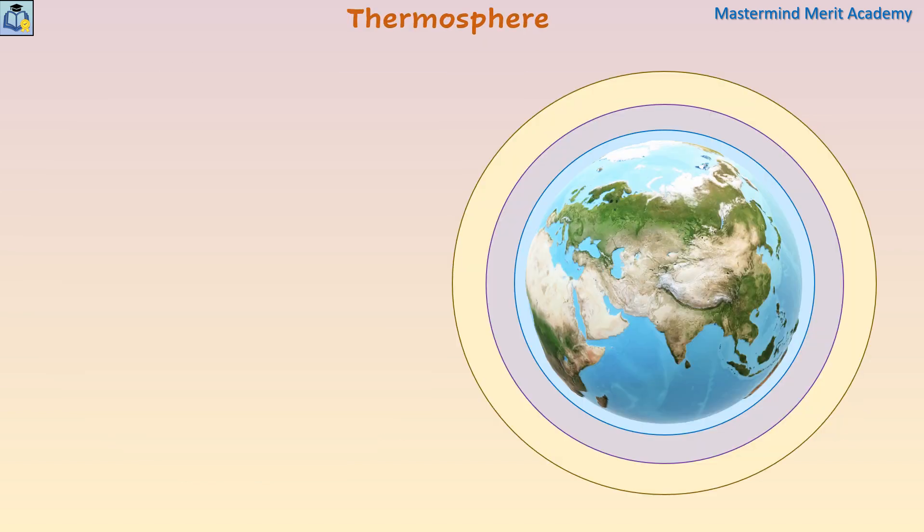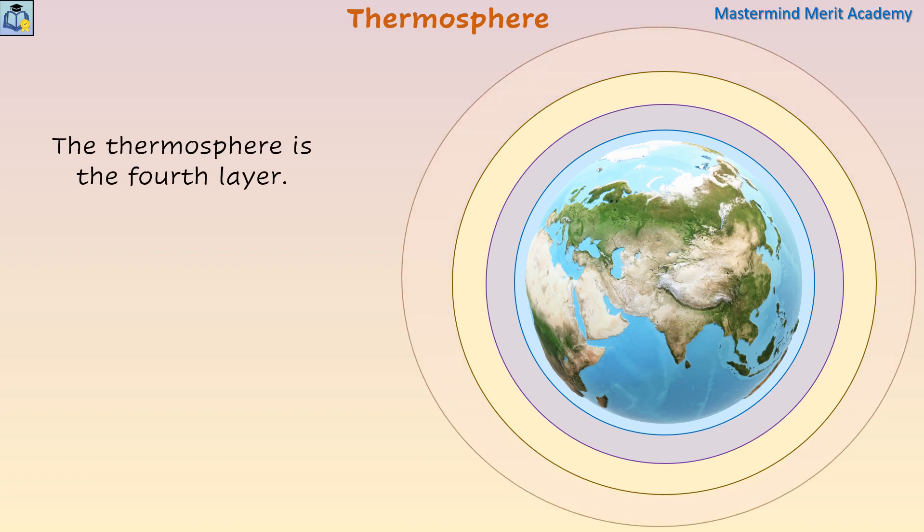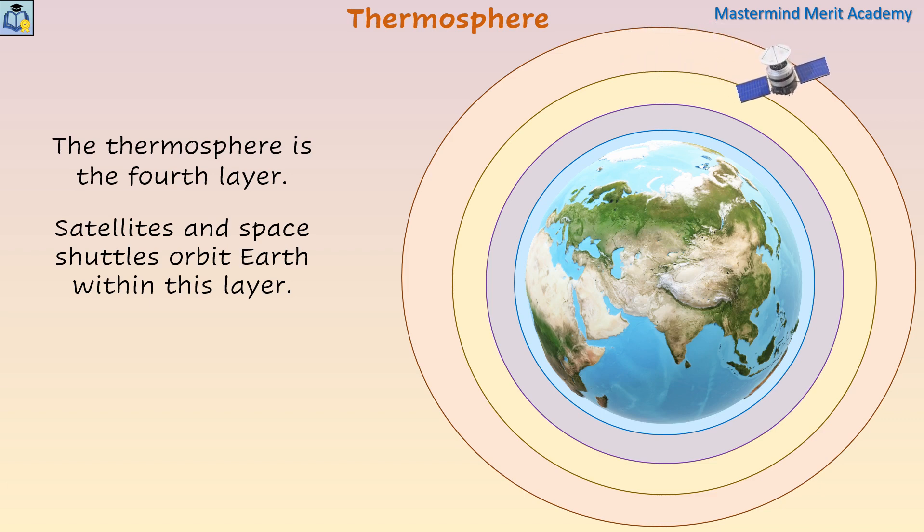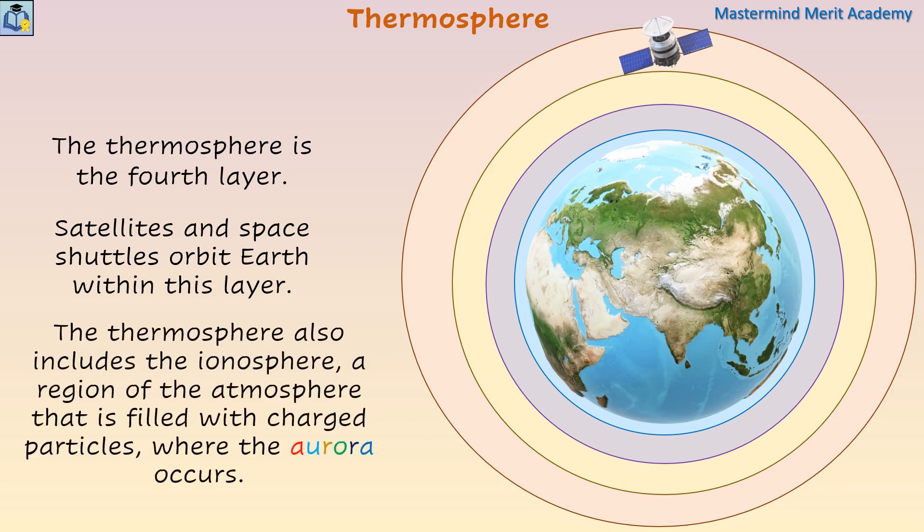The thermosphere is the fourth layer. Satellites and space shuttles orbit Earth within this layer. The thermosphere also includes the ionosphere. This is a region of the atmosphere that is filled with charged particles where the aurora occurs.